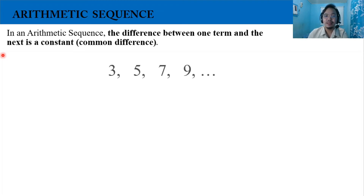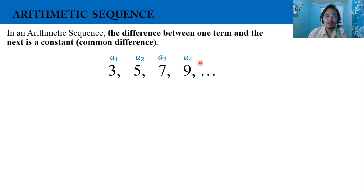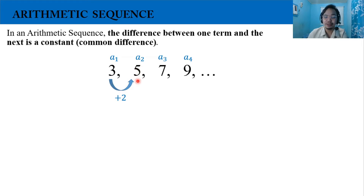Let's have this example. The infinite sequence: 3, 5, 7, 9. 3 is the first term, 5 is the second term, 7 is the third term, and 9 is the fourth term. If we're going to add a number to the first term, let's say 2, so 3 plus 2, the second term will be 5. In the same manner, if we add the same number, which is 2, to this term, the next term will be 7. Again, if we add 2 to 7, the next term will be 9.